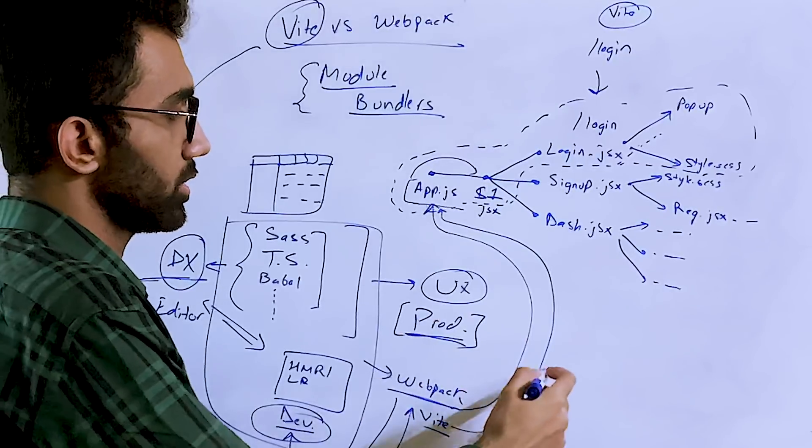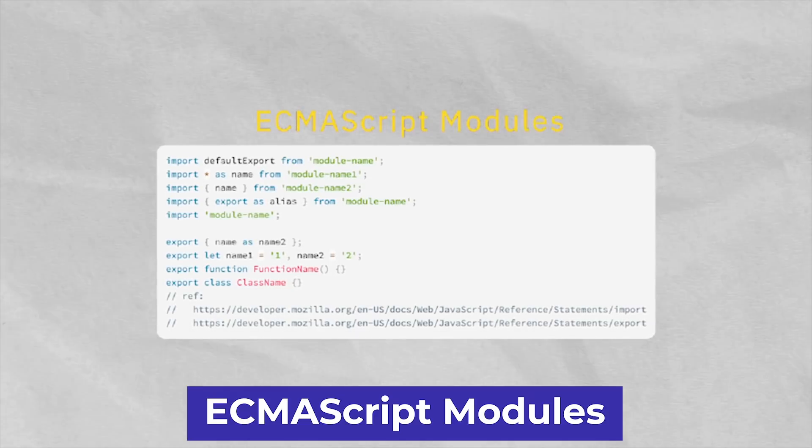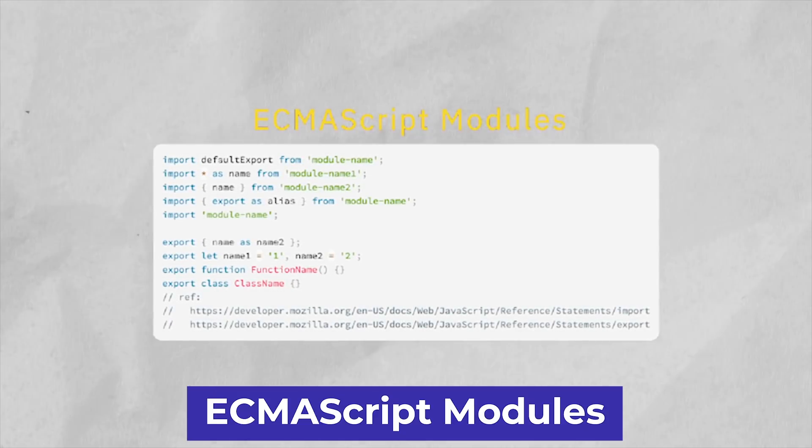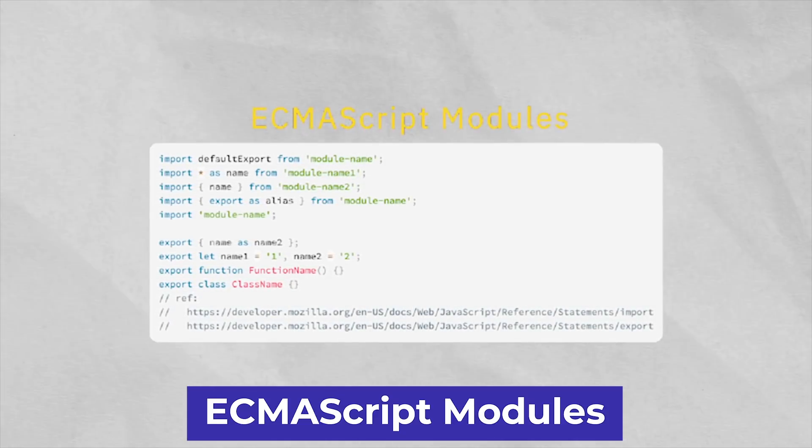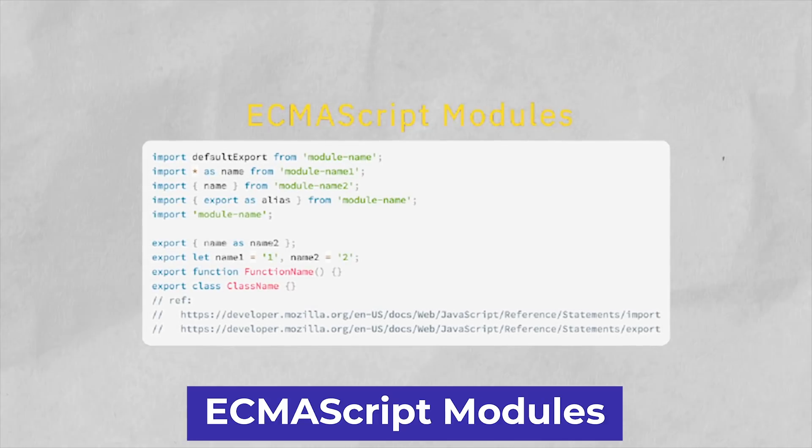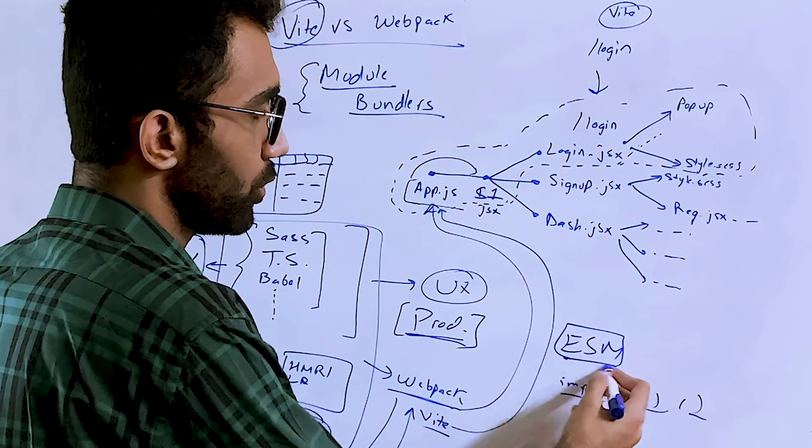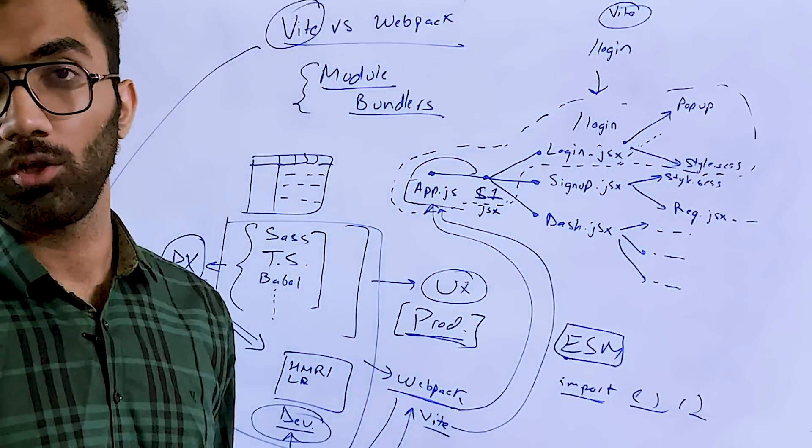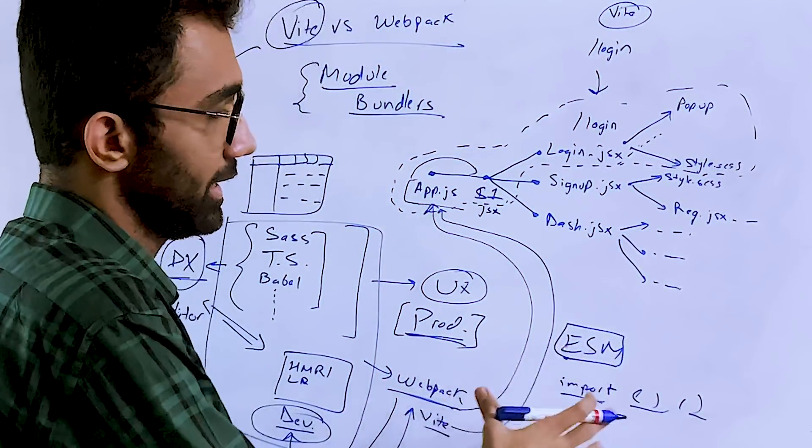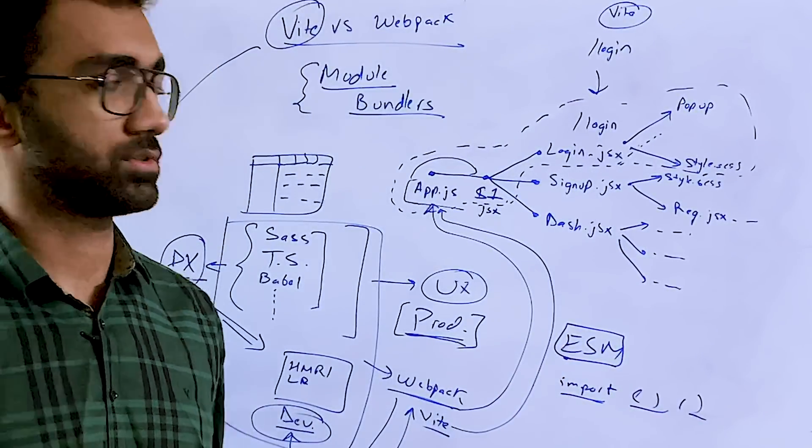But the fundamental approach which Vite takes is only possible because it enforces you to use ECMAScript modules, that is ESM, within the browsers. You would have seen the syntax most likely in TypeScript, if not in JavaScript on Node itself: import something from something. This syntax is ESM. ESM is supported by browsers. ESM is a module bundler, basically a way of splitting files into different modules which is finally supported by browsers.